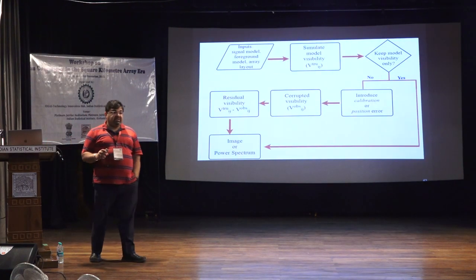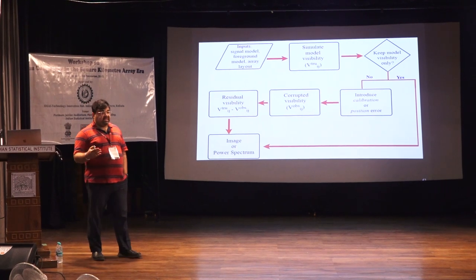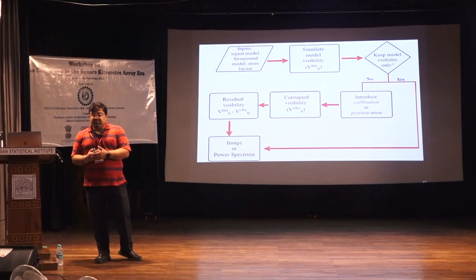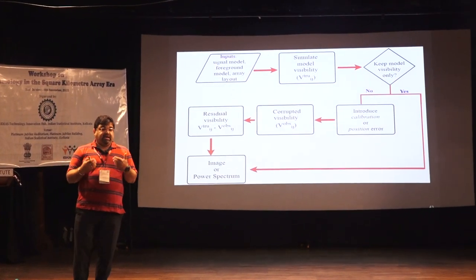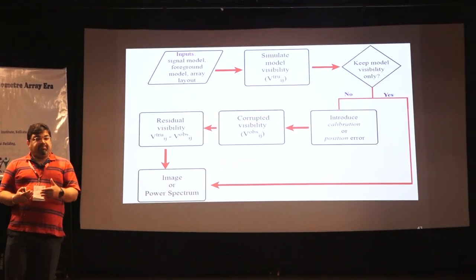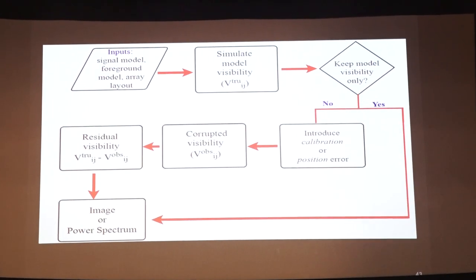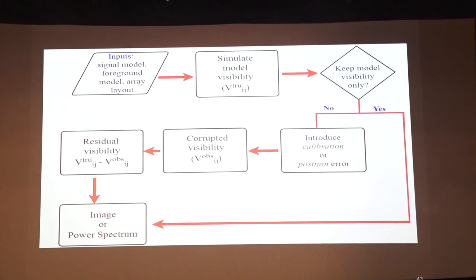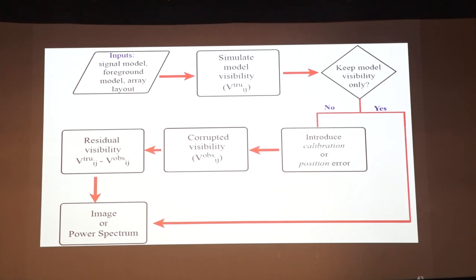That was the part where we use real observations to understand and characterize the foreground challenge: to remove foregrounds you need to constrain them down to the level of the EOR signal, otherwise any imperfect foreground knowledge creates a bias that obstructs signal detection. To go deeper and remove foregrounds better, you cannot rely on observations alone — you need a simulation pipeline to simulate and understand how things work, and to develop better algorithms. One such work led by Aishrila is creating an end-to-end pipeline.